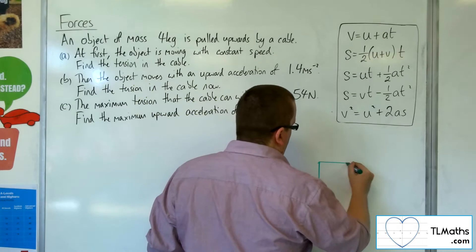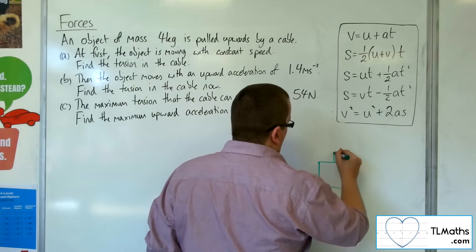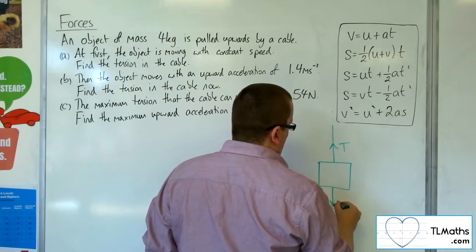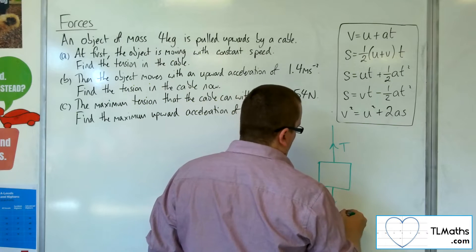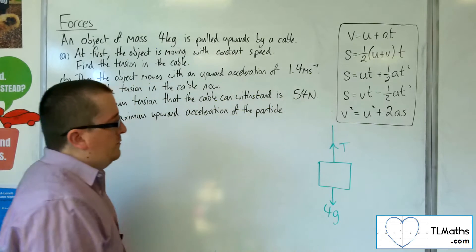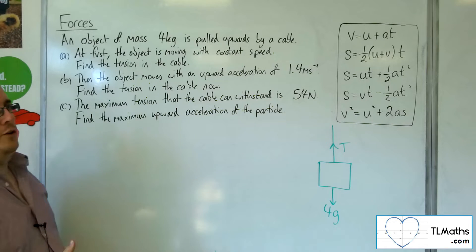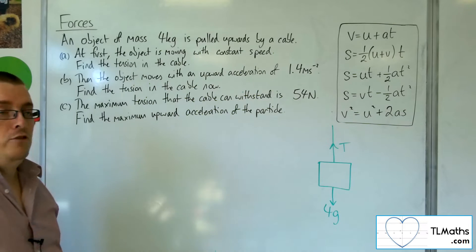Right, let's draw a diagram. So here is the object. We've got this cable. There is tension in the cable. We've got the weight of the particle, which is 4 times g, mass times g. Now, if the object is moving with constant speed, the acceleration is 0.